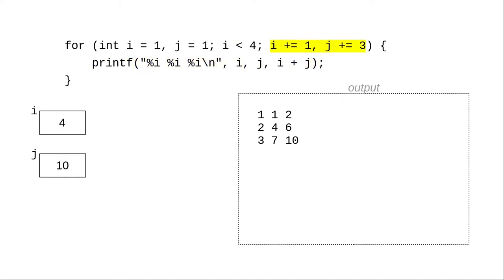The action after iteration increases i to 4, and j to 10. When we come to the test this time, 4 is not less than 4, and the for loop has concluded.